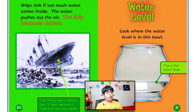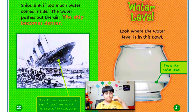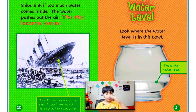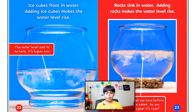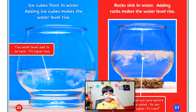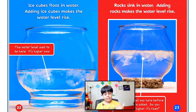Look where the water level is in this bowl. You can see the green part showing the water level — it's near the bottom of the bowl. Ice cubes float in water, and adding ice cubes makes the water level rise. The water level used to be lower, but it's higher now. When you put an object like ice in it, it made it higher.